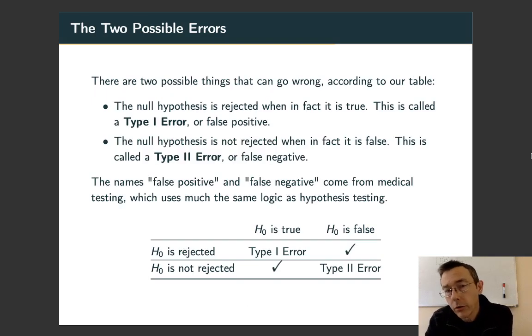So each of those two bad outcomes have names. The first is the type 1 error or false positive. That's when we reject the null hypothesis when the null hypothesis is true. So something happens by random chance and we mistake it for being significant.